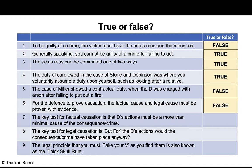For the defence to prove causation, the factual cause and legal cause must be proven with evidence — that is false. It is the job of the prosecution to prove causation. The key test for factual causation is that the defendant's actions must be a more than minimal cause of the consequence — also false, because that is the legal test for legal causation, not factual.